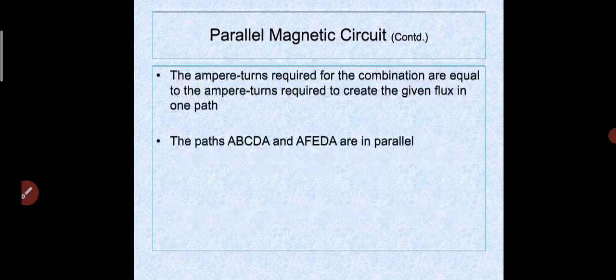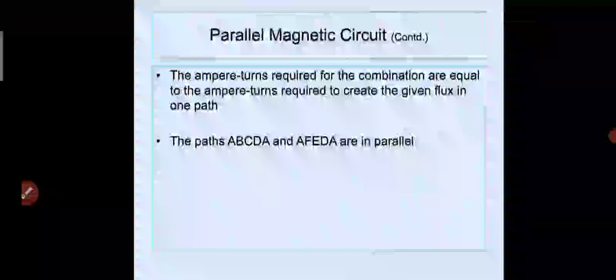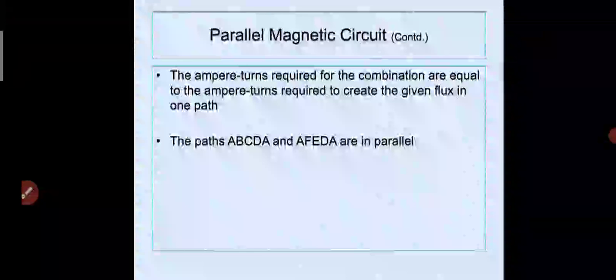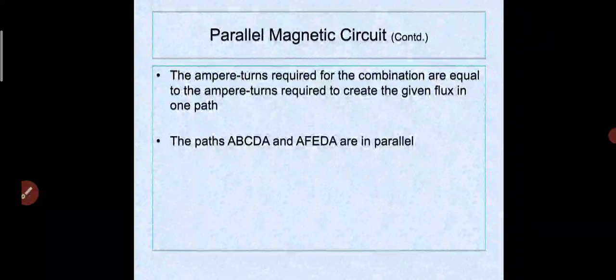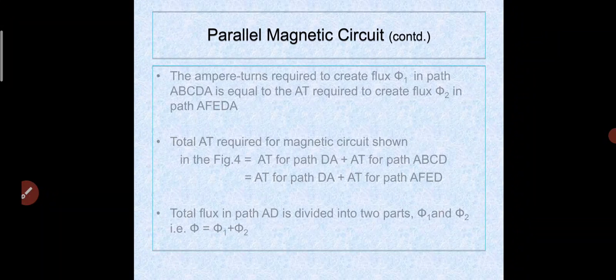The total MMF available equals N·I amperes. The ampere turns required for the combination are equal to the ampere turns required to create the given flux in one path. Paths ABCDA and AFEDA are in parallel. The ampere turns required to create flux φ1 in path ABCDA equals the ampere turns required to create flux φ2 in path AFEDA.